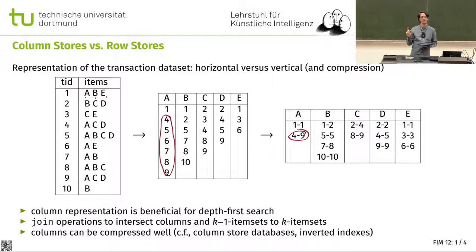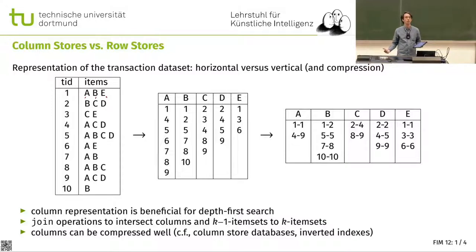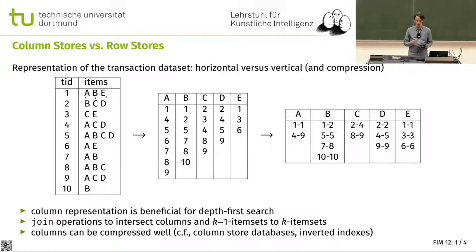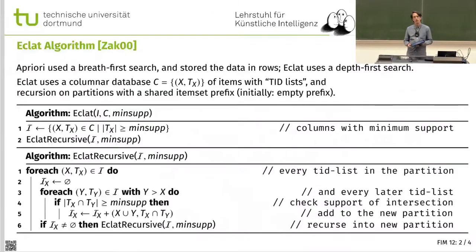This data in a column store is essentially binary data: either an item is in a transaction or it is not. On a boolean column, I can do run-length compression quite well. There are more relevant techniques — all types of bit set compression techniques, such as roaring bitmaps. For some of these techniques, I can also use them to compute intersections faster. If I have interval four to nine and interval four to five, I can compute the intersection four to five quite easily without enumerating and checking each one — I can work on intervals directly.